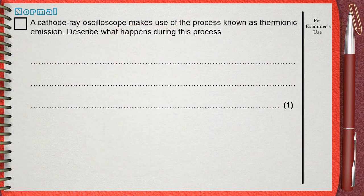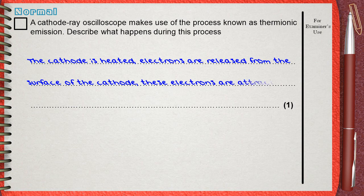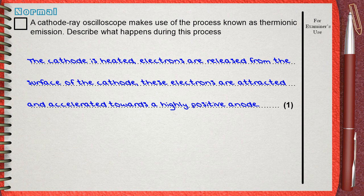So to describe what happens during the process of thermionic emission, the answer will be: the cathode is heated, electrons are released from the surface of the cathode, and these electrons are attracted and accelerated towards a highly positive anode. That is a long, detailed answer that includes everything and even more than what is needed.